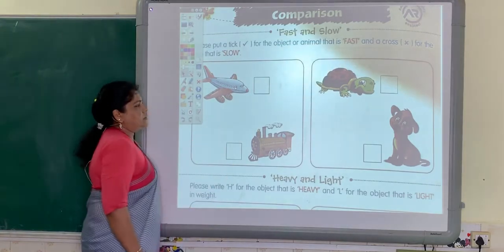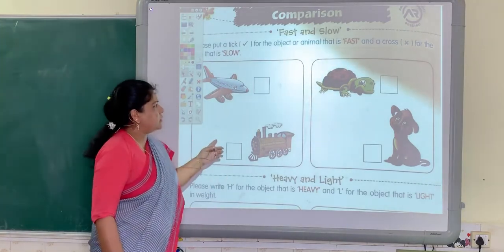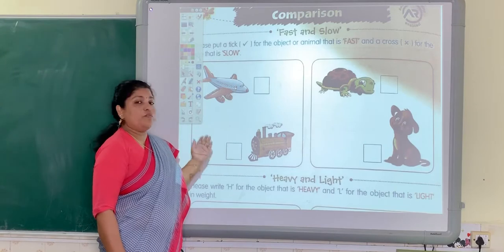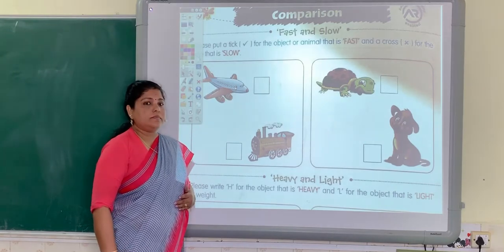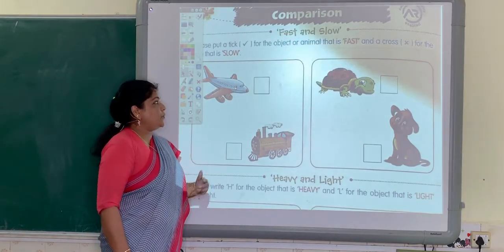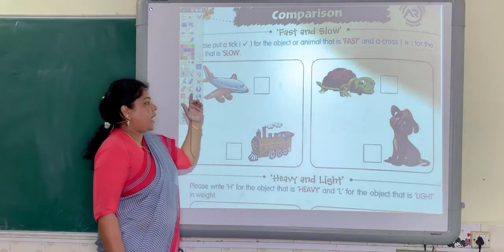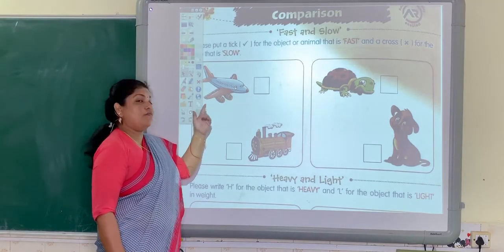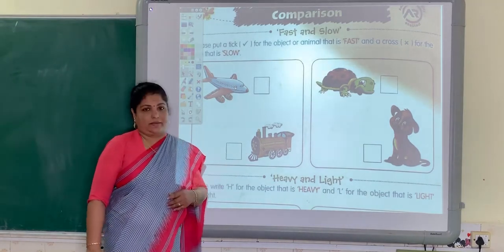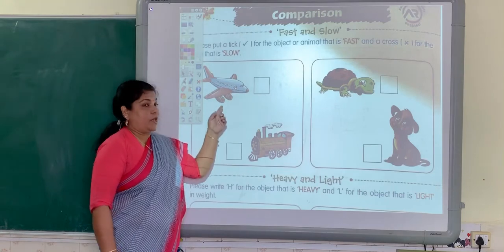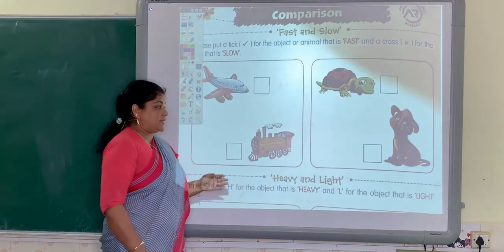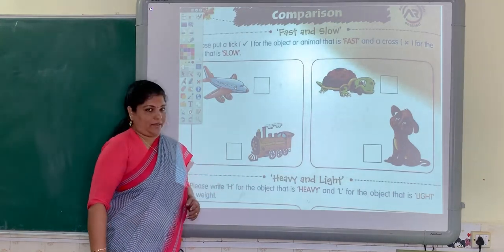Aeroplane. Can you tell me which vehicle can move fast? I will tell you — this aeroplane moves faster than this train. Understood? This aeroplane moves faster than this train.